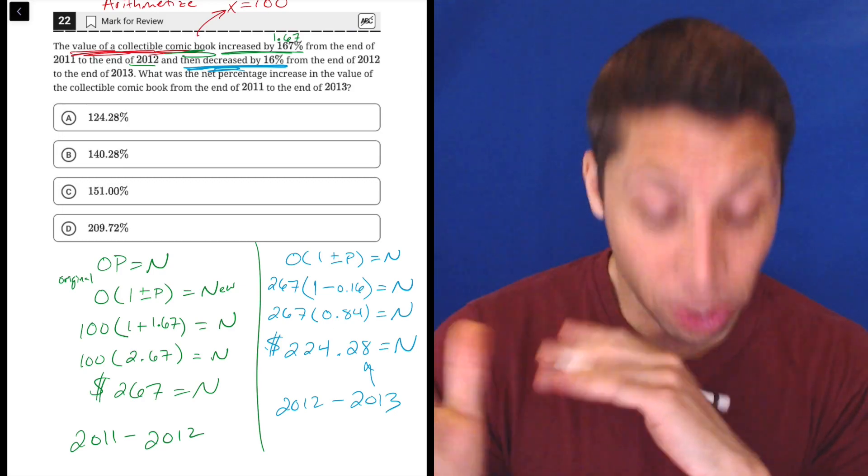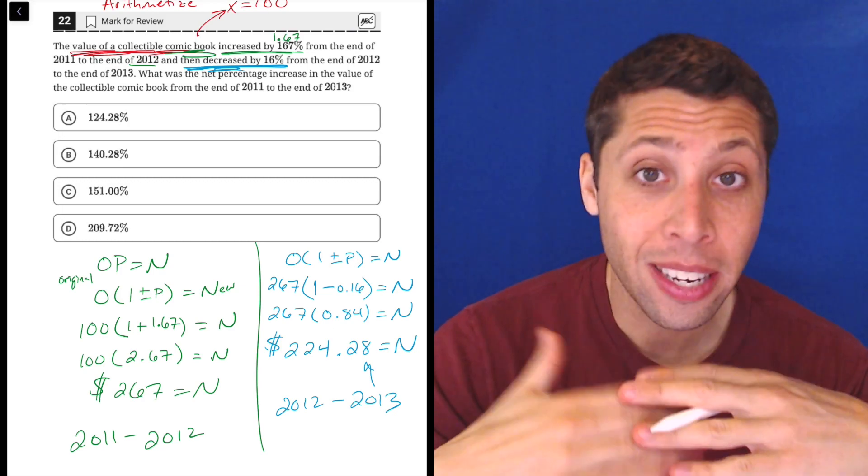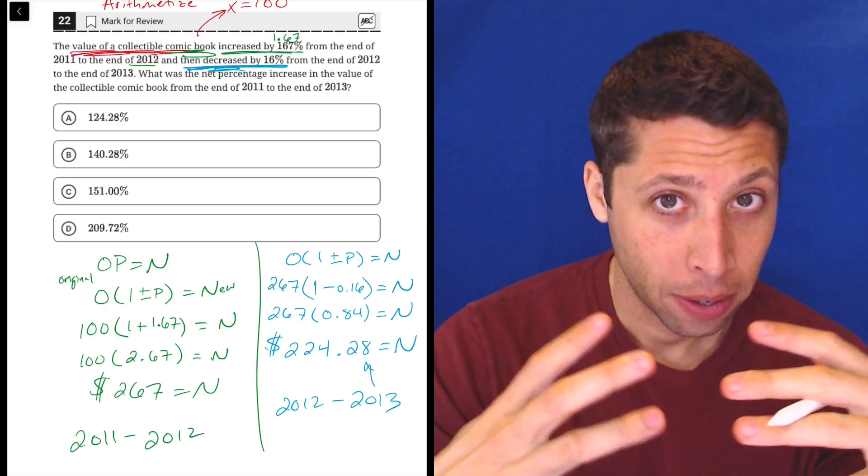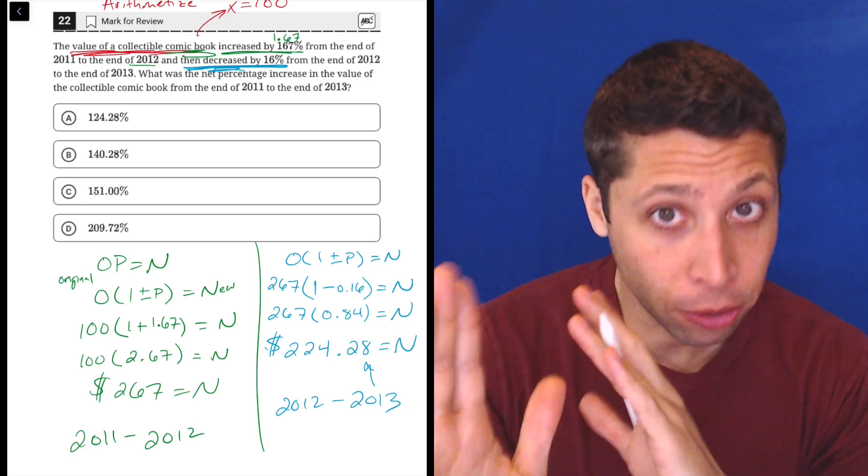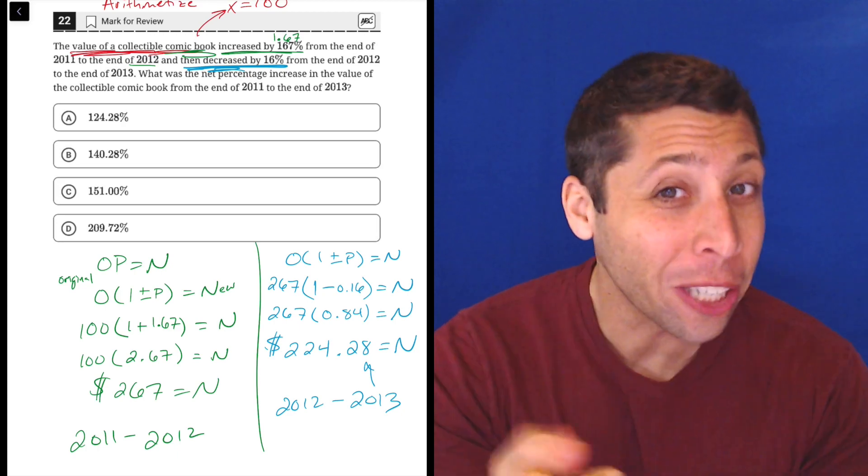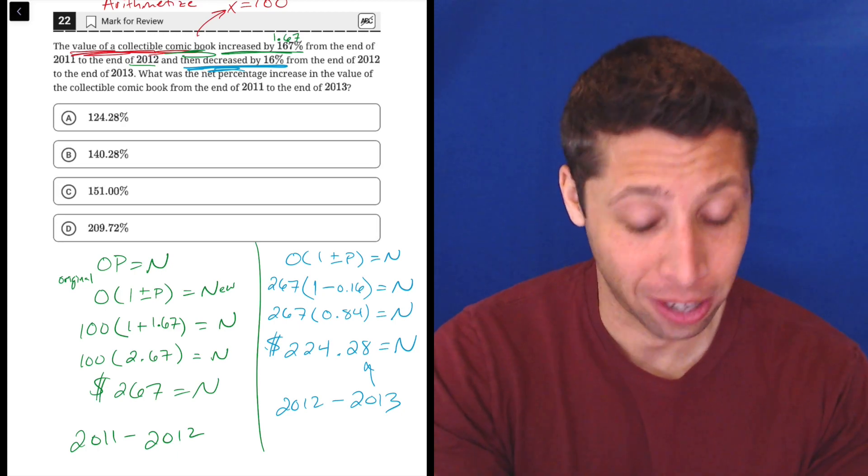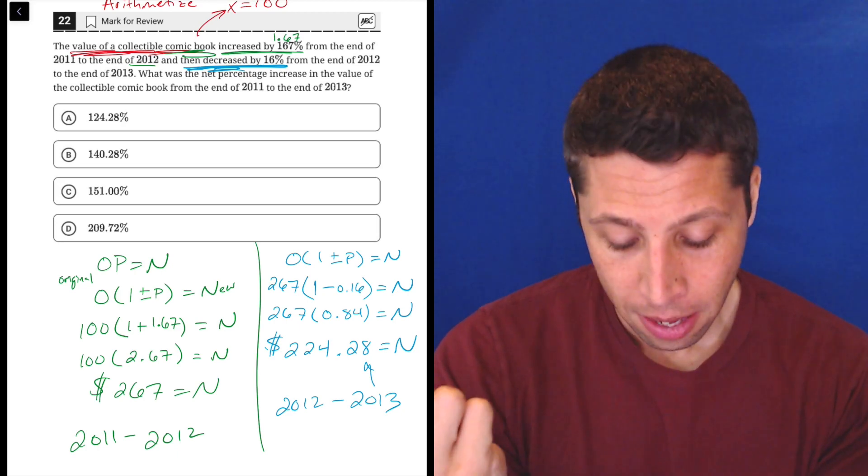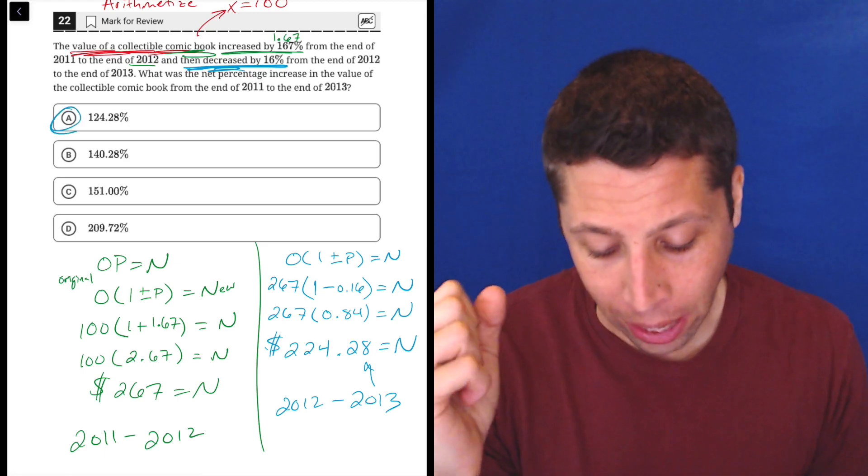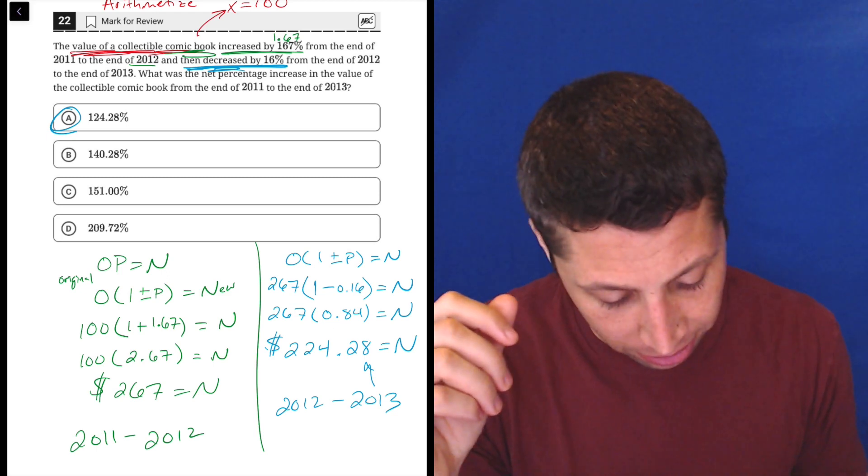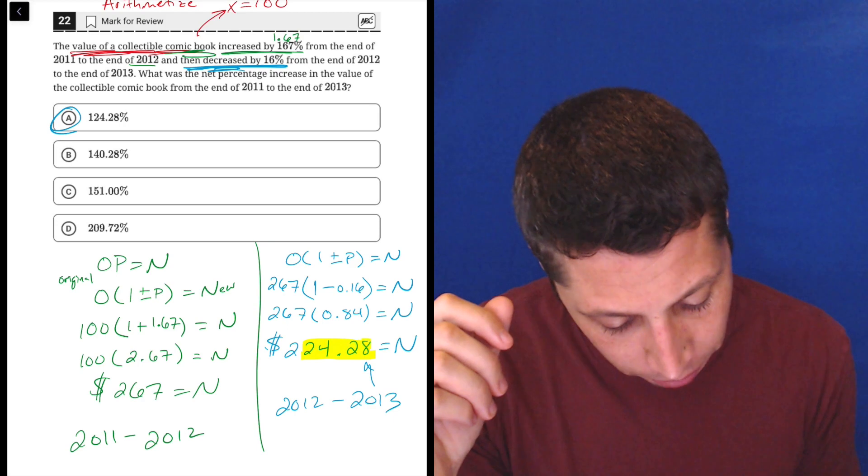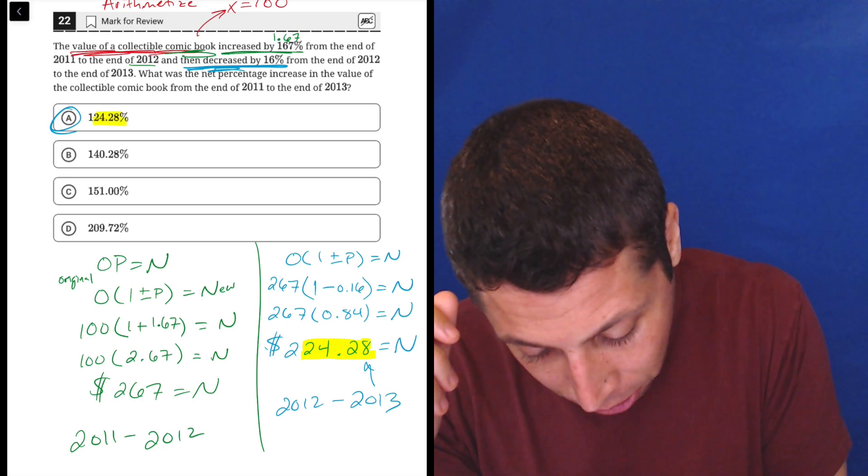So we're just being asked, finally, what is the net percent increase in this comic book? If we had picked a different number, the percent increase would be the same. But because we picked a hundred, we can kind of just look at the final price and know the answer, especially because there isn't really a trap answer here. The answer is A, 124.28. We kind of see where that's coming from, right? We at least see some of the same numbers, right? 24.28, right? That's part of it. And then 24.28.